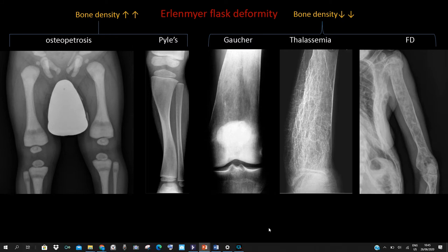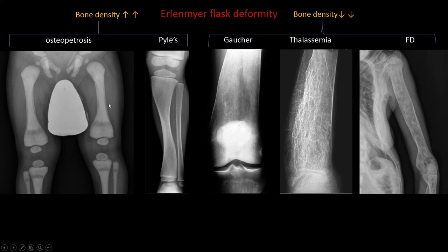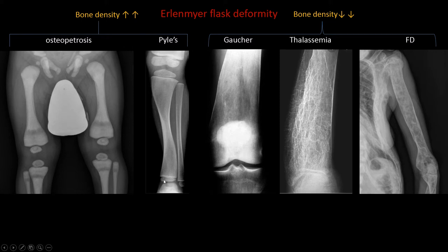In osteopetrosis there is generalized increased bone density, and we can notice alternating dense and lucent metaphyseal lines. You can ask for a spine X-ray looking for well-defined sclerosis of the endplates, giving sandwich vertebrae. In Pyle disease — metaphyseal dysplasia — it typically appears as flared lucent metaphysis with sclerotic epiphysis.